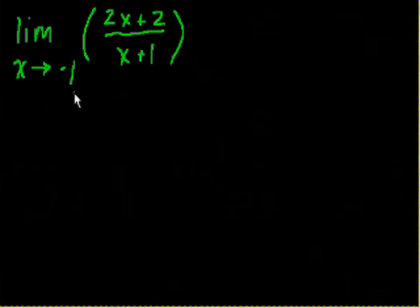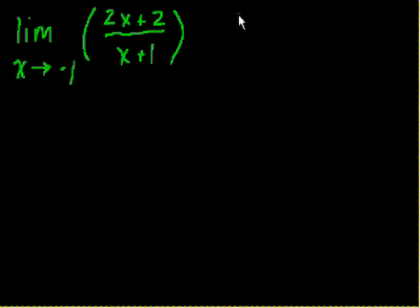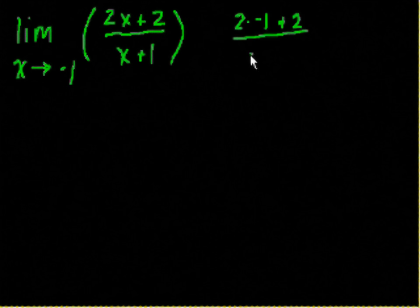So the first thing I would always try to do is just say, well, what happens if I just stick x straight into this expression, what happens? Well, what's 2x plus 2 when x is equal to negative 1? It's 2 times negative 1 plus 2 over negative 1 plus 1. Well, the numerator is negative 2 plus 2. That equals 0 over, what's the denominator? Negative 1 plus 1 over 0. And do we know what 0 over 0 is? Well, no, it's undefined.